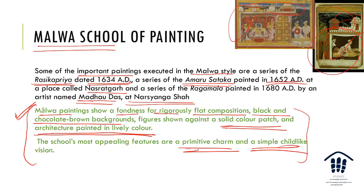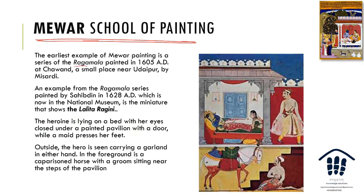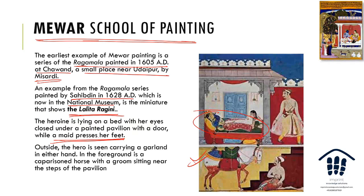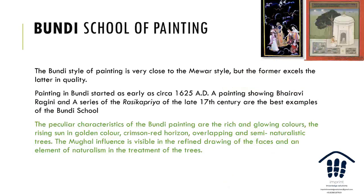The Mewar school is quite different. The earliest example is the Ragamala painting of 1605, depicting Hindu ragas like Deepak, Hindola, etc., done at Chavand near Udaipur by Misaradi. Another example by Sahabuddin in 1628 is in the National Museum. The Lalita Ragini shows the heroine lying on a bed with eyes closed, a maid pressing her feet, the hero carrying a garland, and the groom sitting near steps of a pavilion — love scenes depicting real-life experiences.